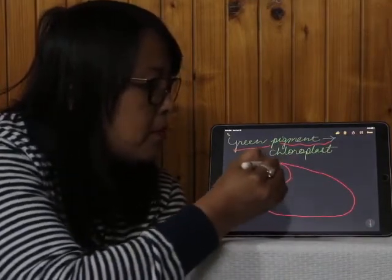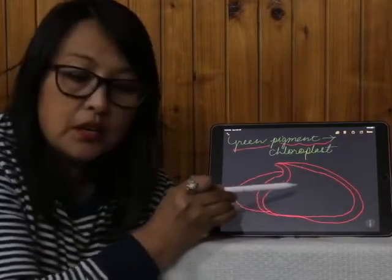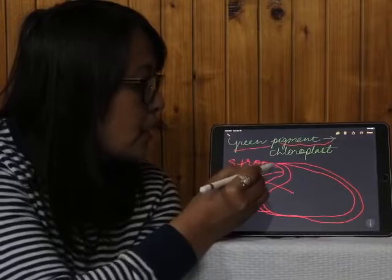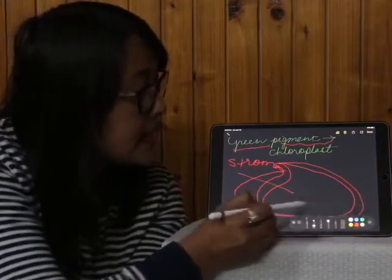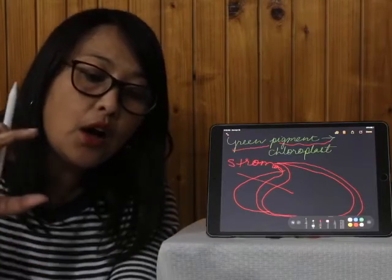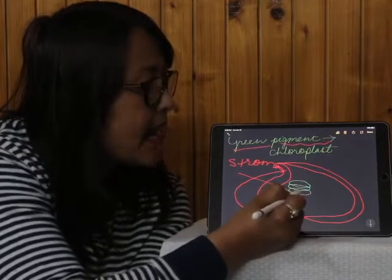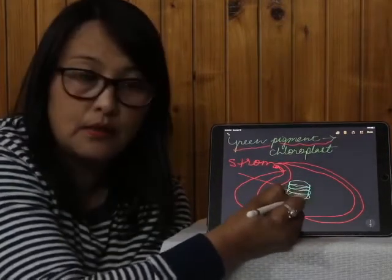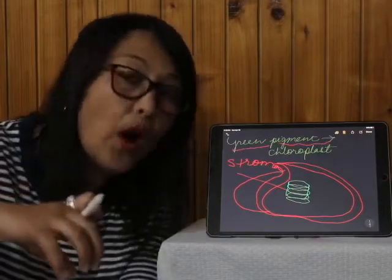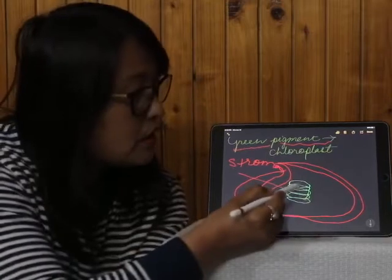Chloroplasts are minute, very tiny oval bodies with two membranes — one outer membrane and one inner membrane. The inner portion, the ground substance, is known as stroma. Inside the stroma you will find thylakoids. Thylakoids are closely packed, flattened sacs stacked one on top of the other — just like coins placed one on top of the other to form a pile.